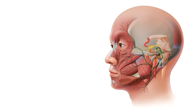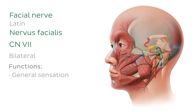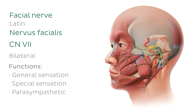The facial nerve belongs to a set of neural structures called the cranial nerves — peripheral nerves named due to their course through the cranium, which houses the brain and brainstem. It's often referred to as cranial nerve 7, the seventh of 12 cranial nerves, abbreviated as CN VII. It's a bilateral nerve serving many functions in the head and neck: general sensation to a small area of the ear, special sensation of taste to the anterior two-thirds of the tongue, parasympathetic innervation of the salivary glands, mucus-secreting glands of the nasal and oral cavities, and the lacrimal glands, as well as branchial motor function to the muscles of facial expression and small muscles associated with the ear.